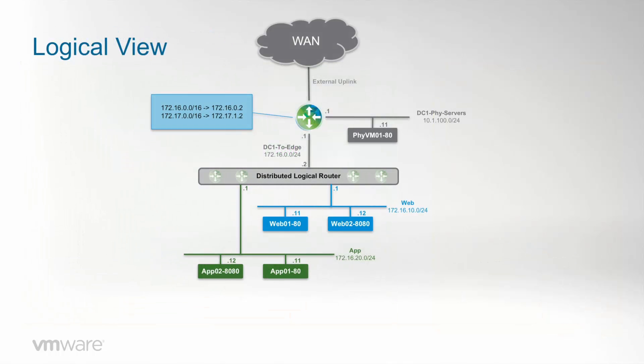If we look at the logical view, on the top part of the screen we have a green router — the NSX Edge — which integrates the NSX environment with the existing environment, something like the demarcation point between worlds. Below the NSX Edge there is the distributed logical router, which runs in kernel on each ESXi host server and is the default gateway for each IP subnet created with NSX.